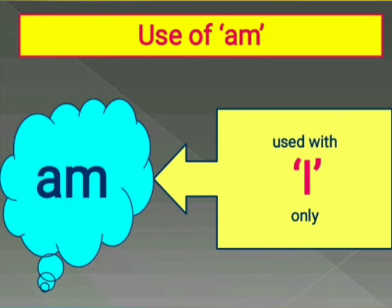For example, if there is a blank saying 'I ___ a girl', then am is going to come as the answer. So the sentence will become: I am a girl. I hope this is clear to you.